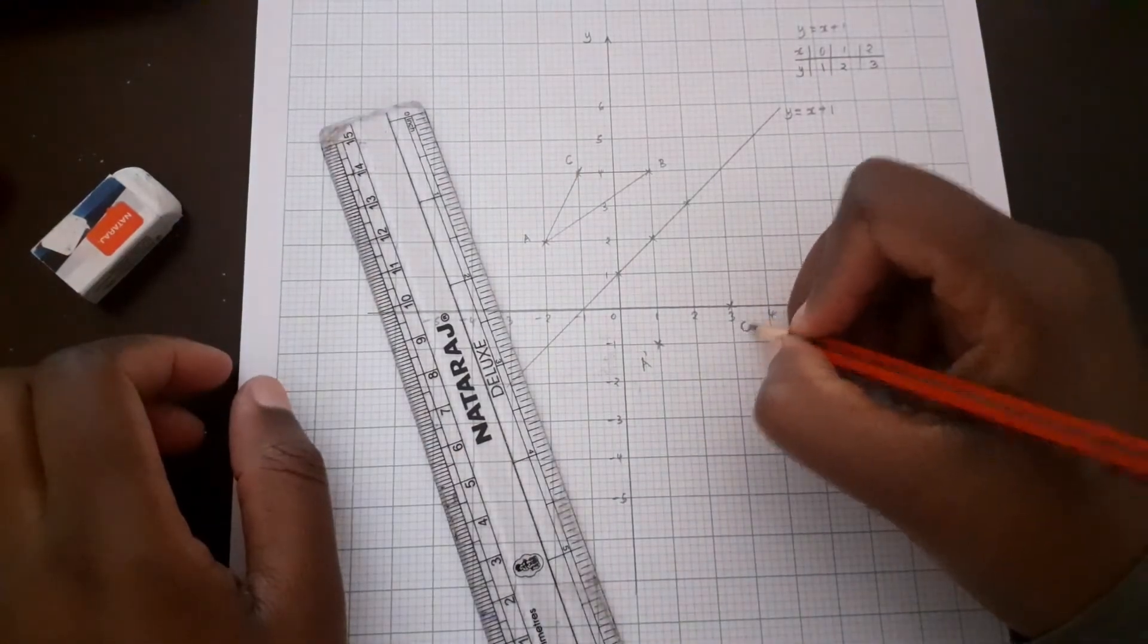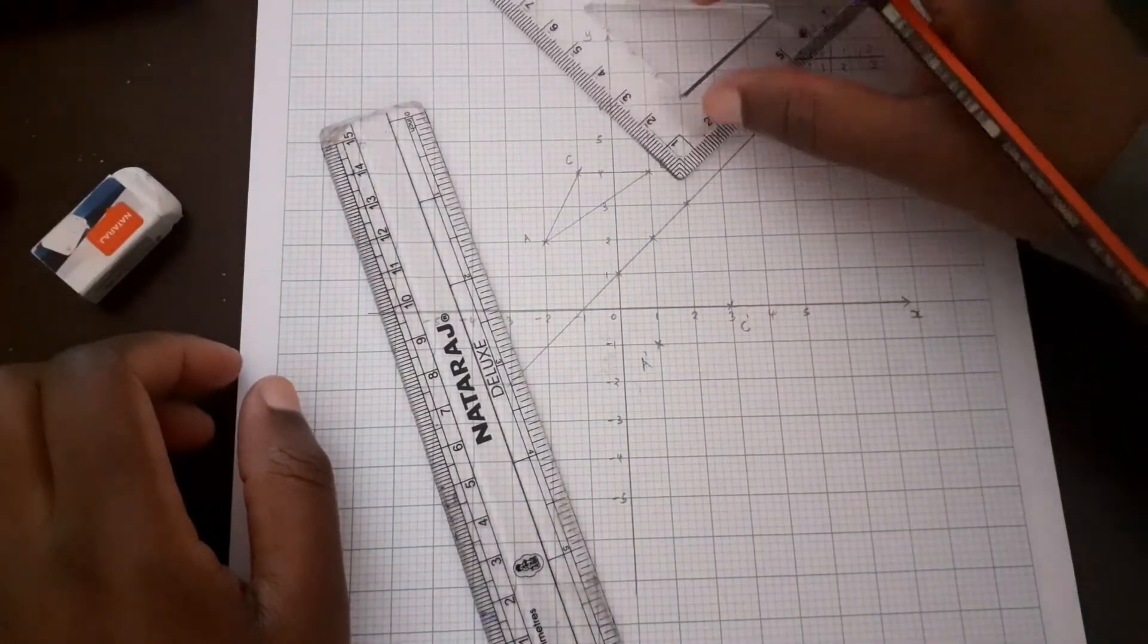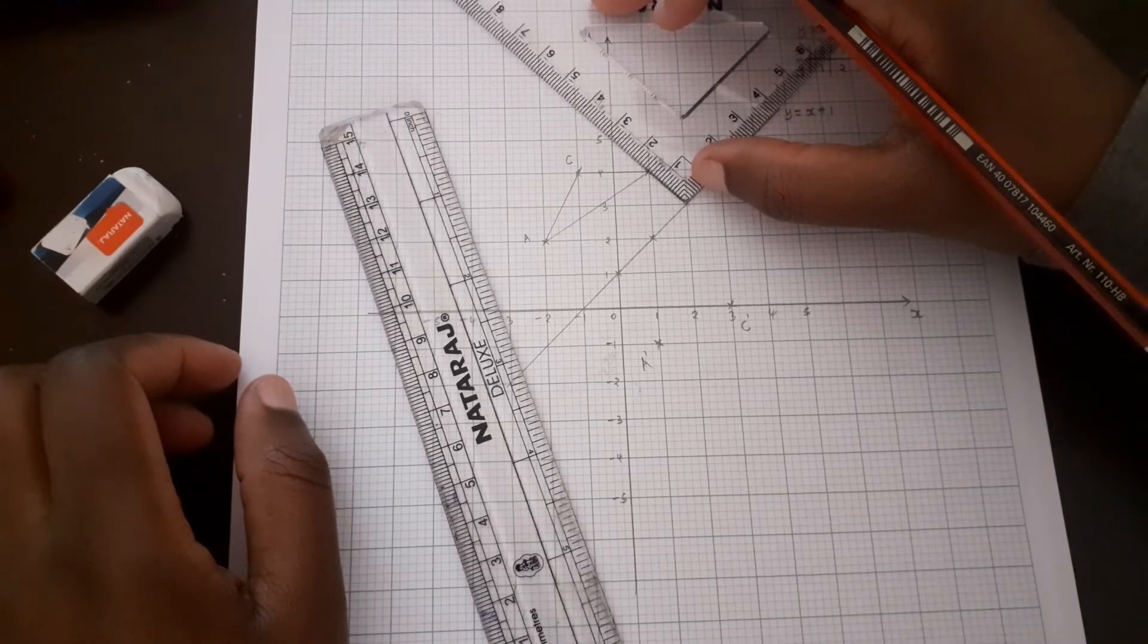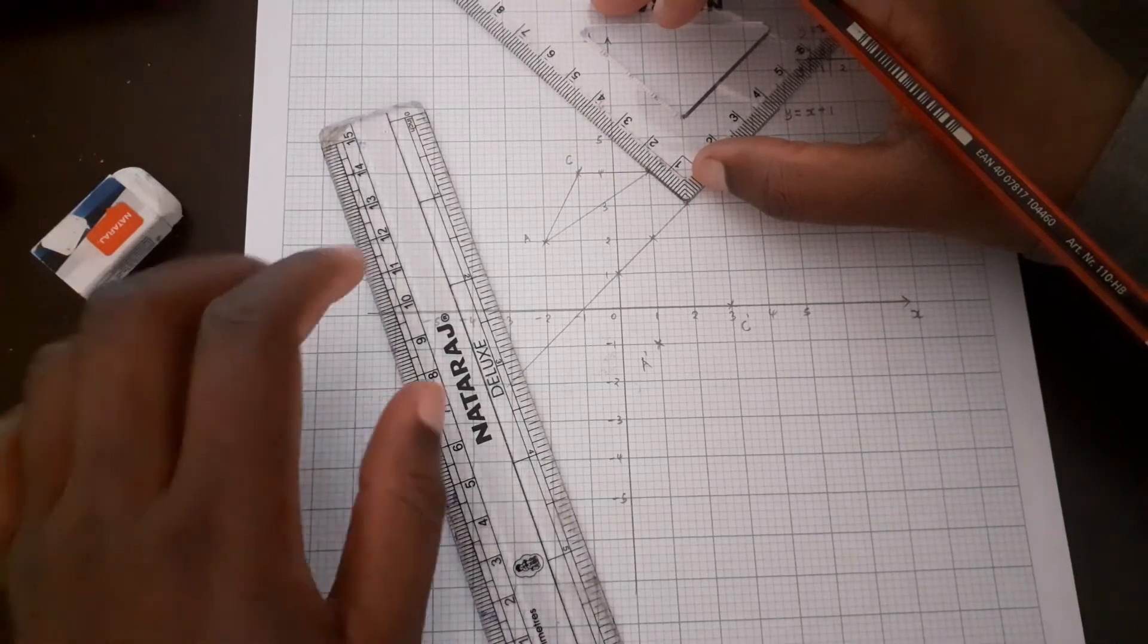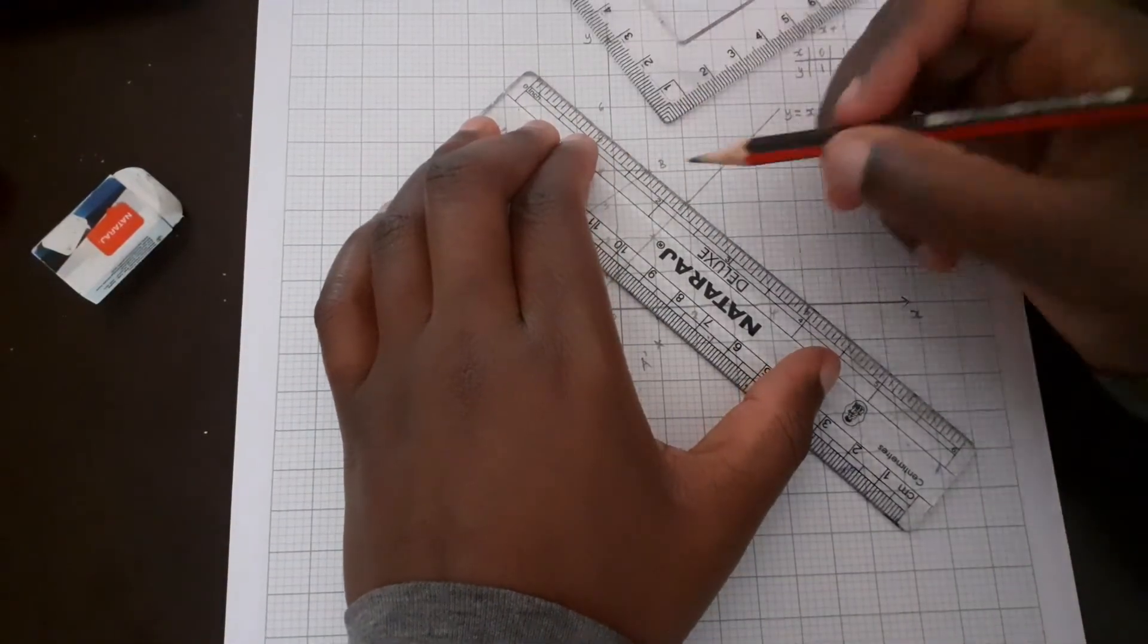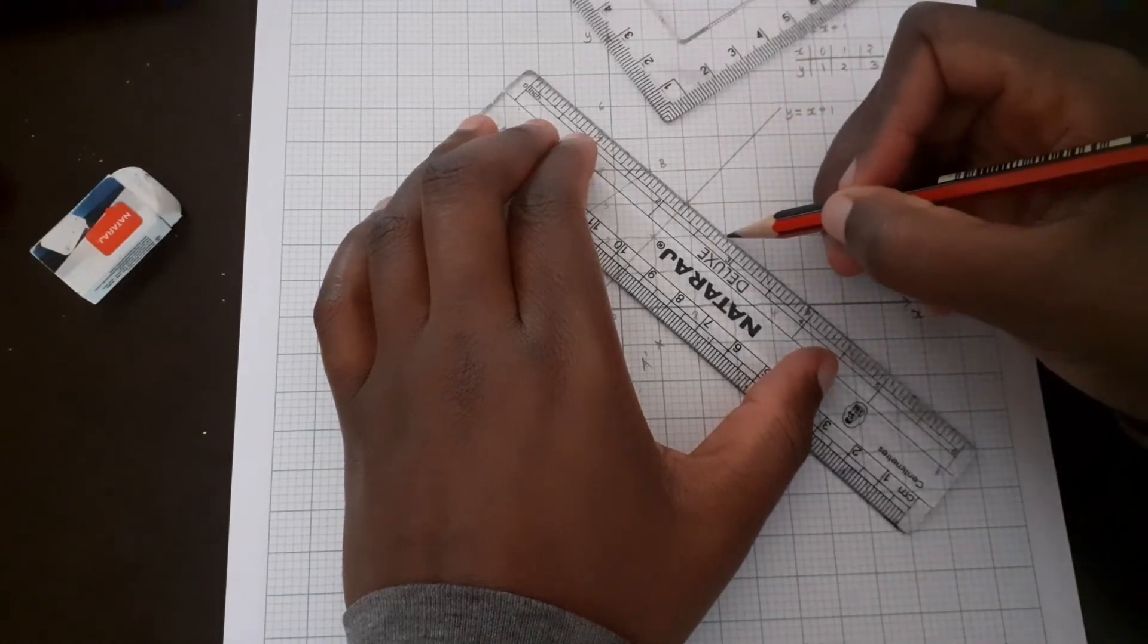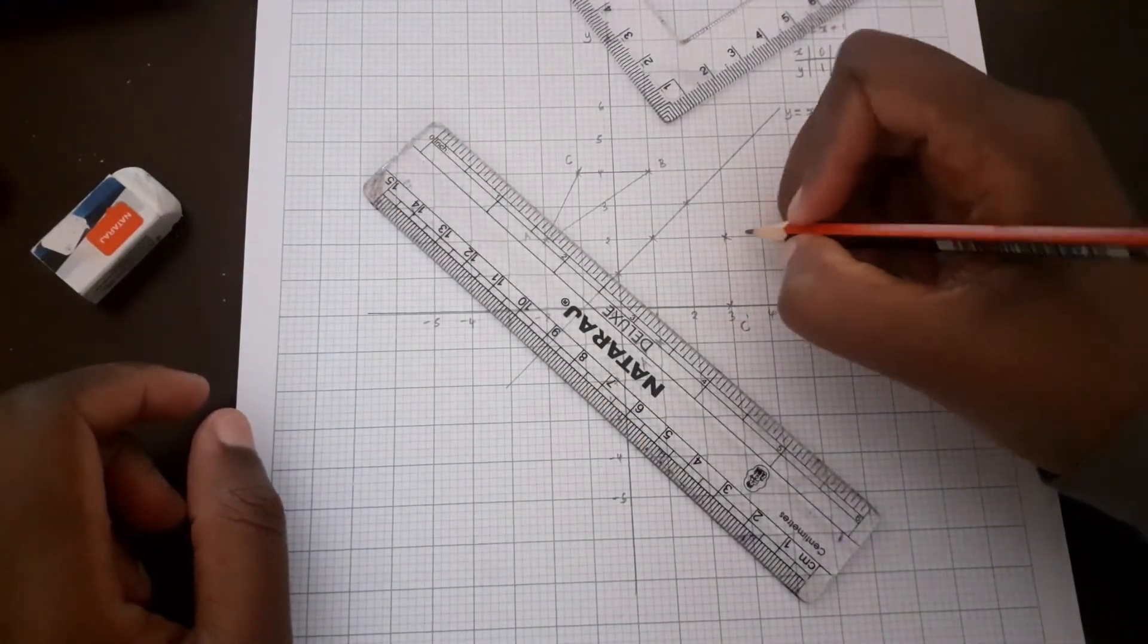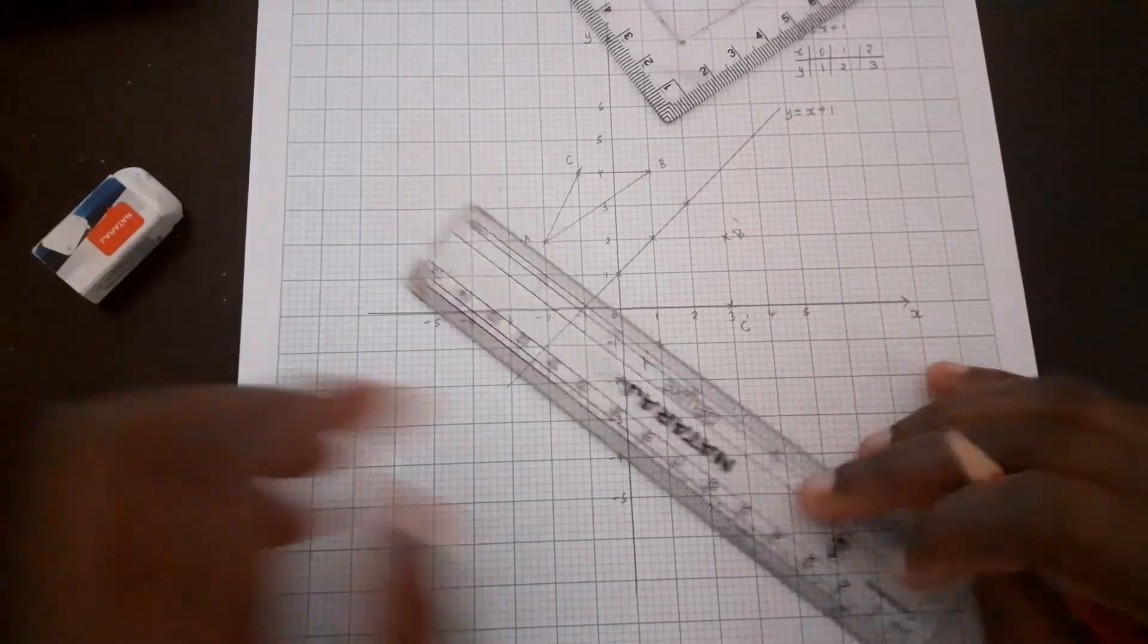And for B, the same thing. This is one step, one step in the opposite direction. This is B'. Then you join the points.